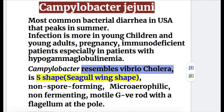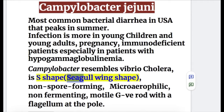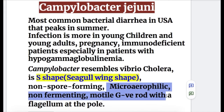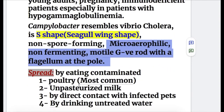The organism resembles Vibrio cholerae. It is S-shaped, seagull wing-shaped, non-spore-forming, microaerophilic, non-fermenting, gram-negative rod with a flagellum at the pole. So it is a motile, microaerophilic organism that is gram-negative and has a single flagellum.